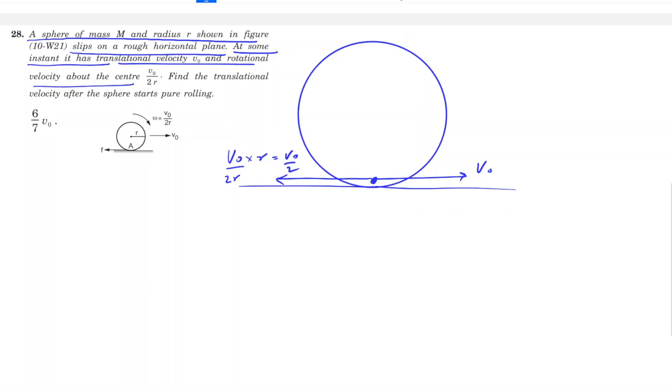Now, if I talk about pure rolling, in the case of pure rolling, omega into R and V0 should be the same. But here, the linear velocity is more. Friction will act in the backward direction on the sphere.